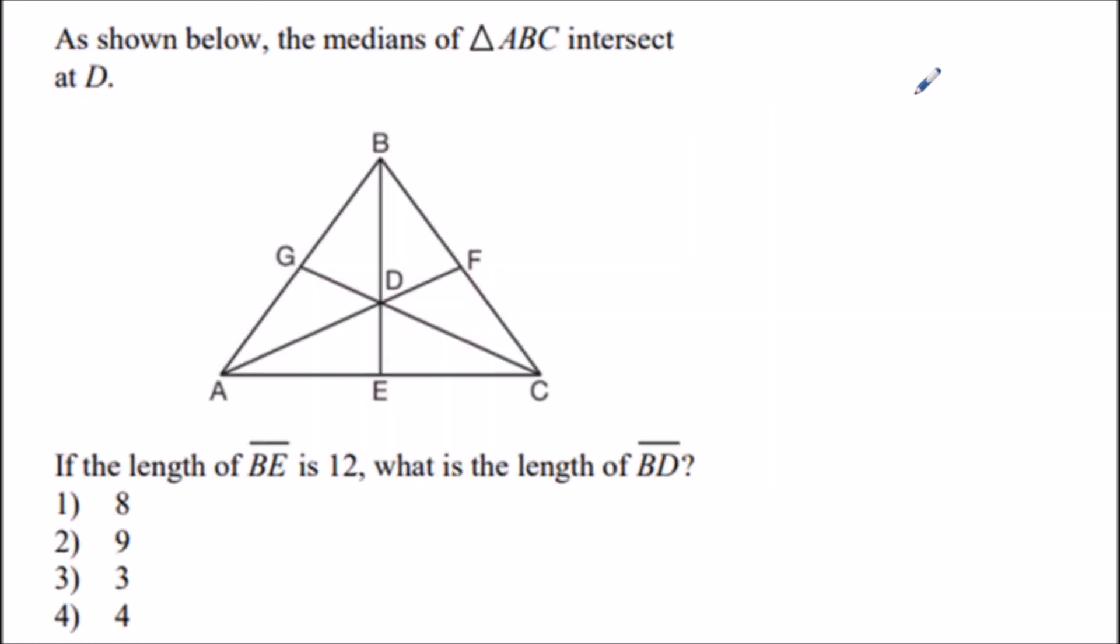For the next question, we have triangle ABC with all three medians drawn. The length of median BE is 12 units, and we want to find the length of segment BD. First, we need to know that point D is the centroid of this triangle.